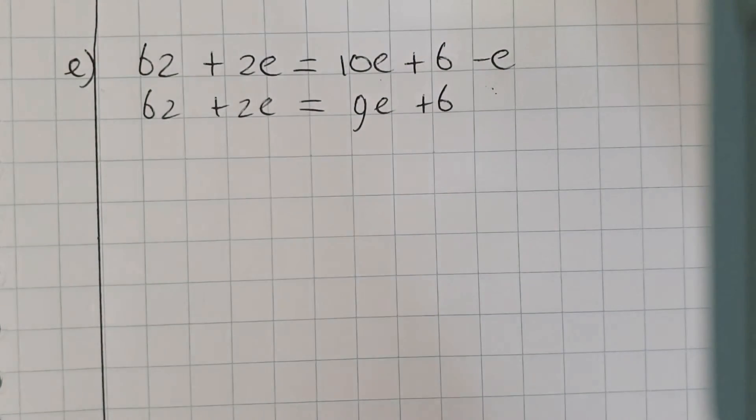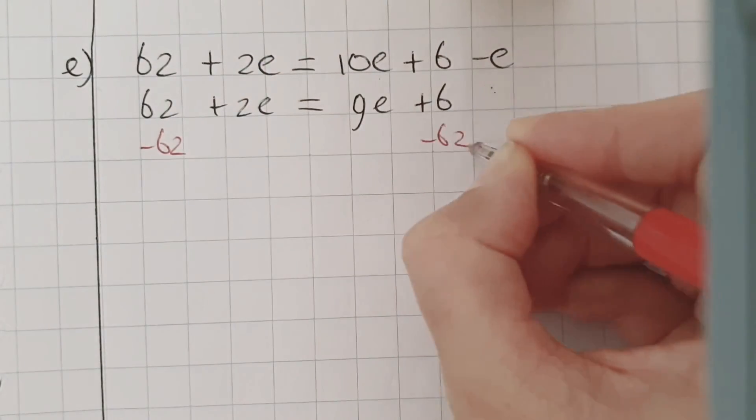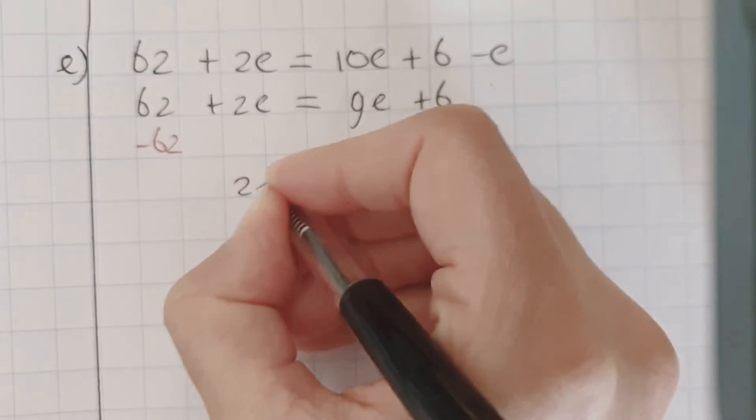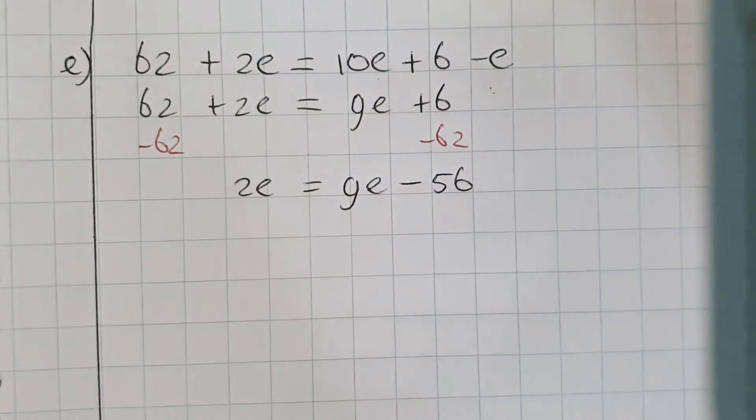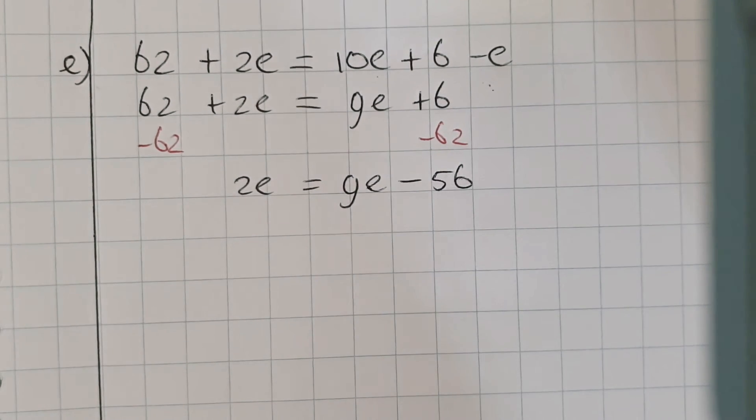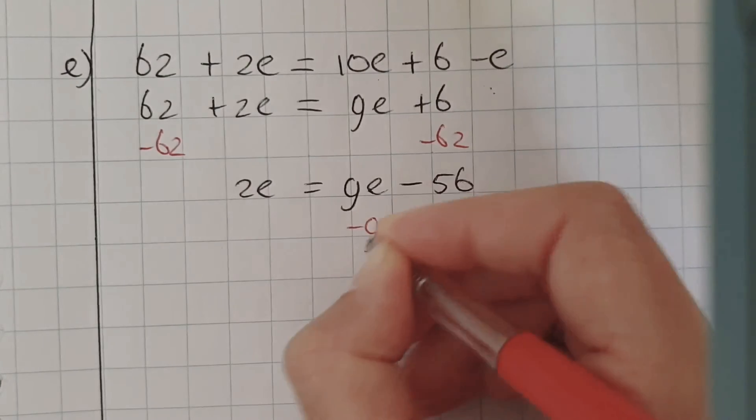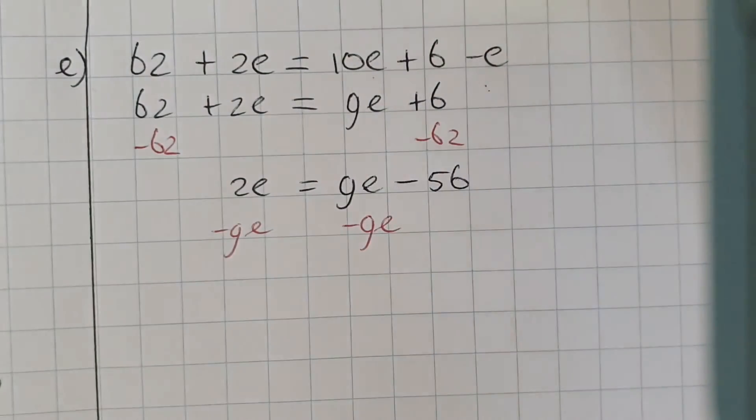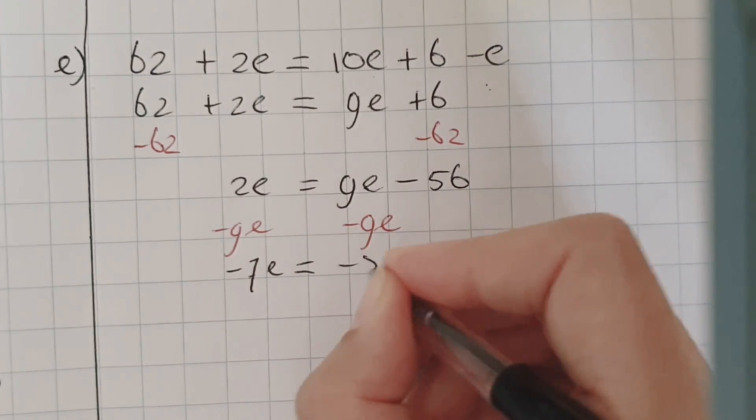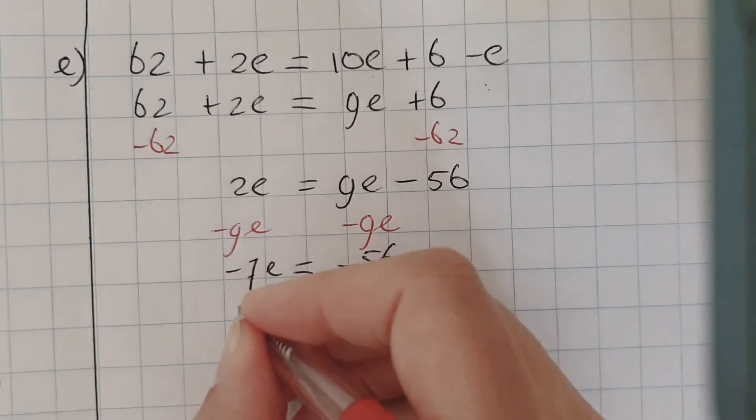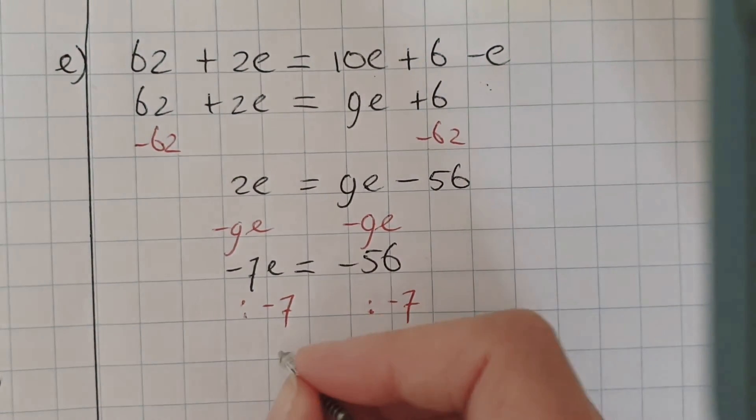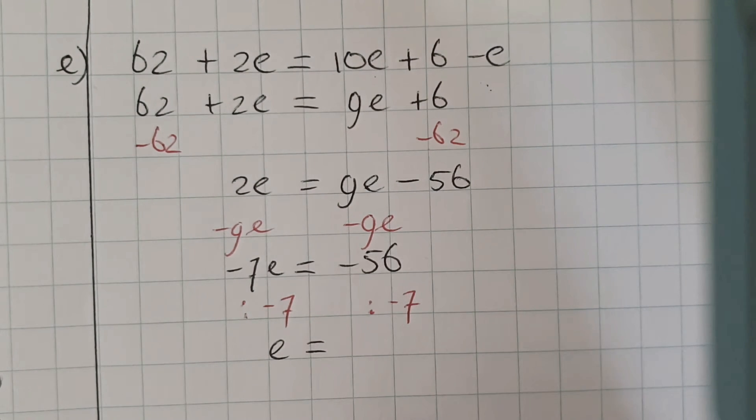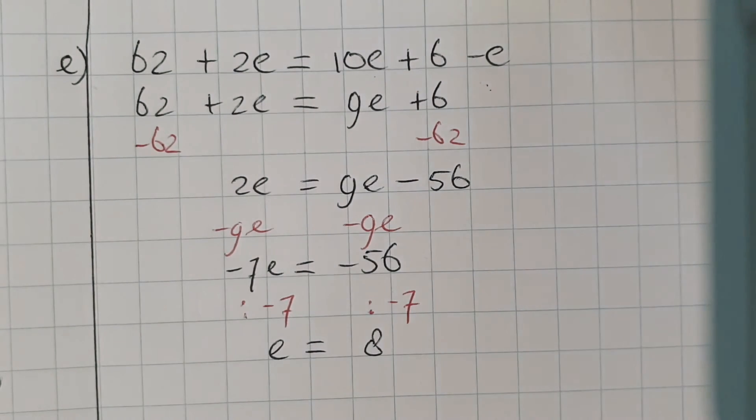So I'm going to do minus 62 on this side and minus 62 on this side. That's 2e equals 9e minus 56. Then I'm going to do minus 9e here and minus 9e here. And that's minus 7e equals minus 56. Then divide by the number in front of the letter on both sides. So that's divided by minus 7. E is minus divided by minus is plus. And 56 divided by 7, that's 8. So E is 8.